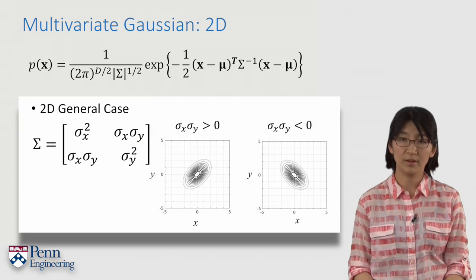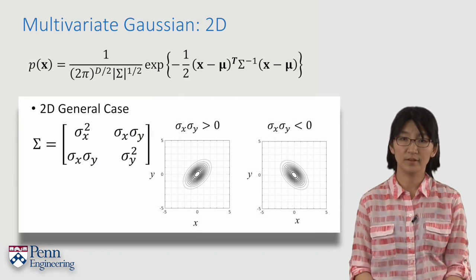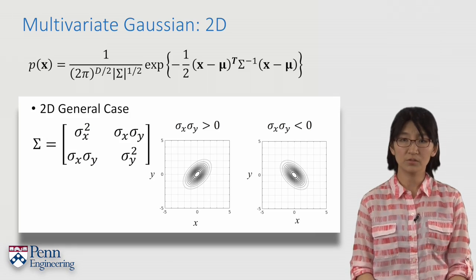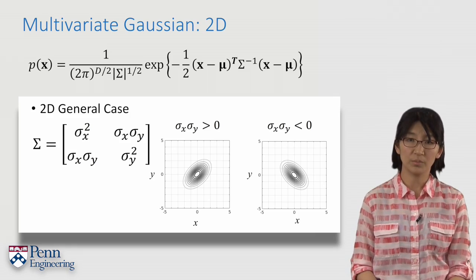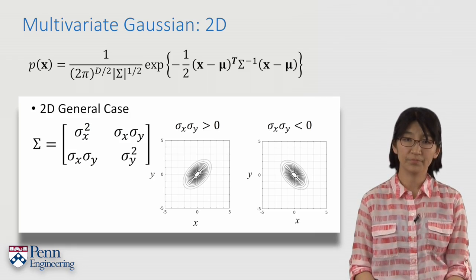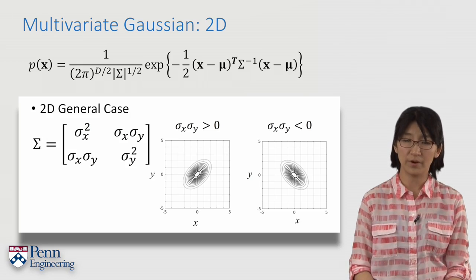As I mentioned, sigma includes correlation terms in the off-diagonal elements. If sigma has nonzero off-diagonal terms, then the shape of the Gaussian appears skewed. And apparently, this cannot happen when we deal with a single variable.